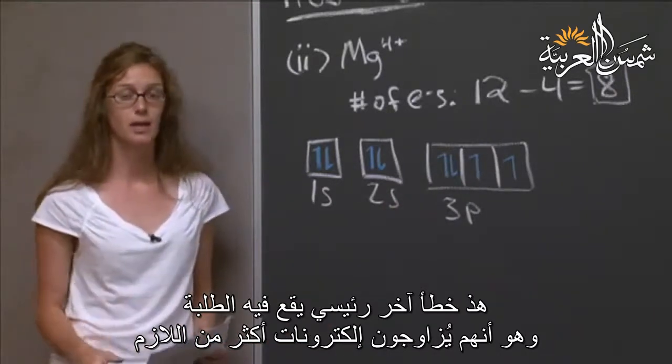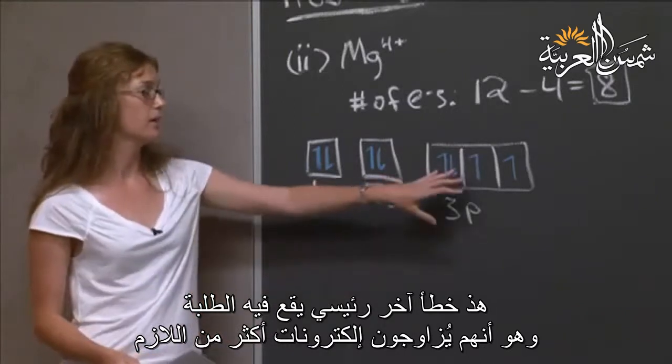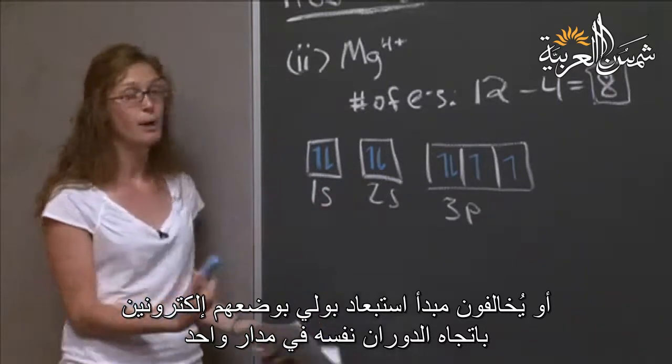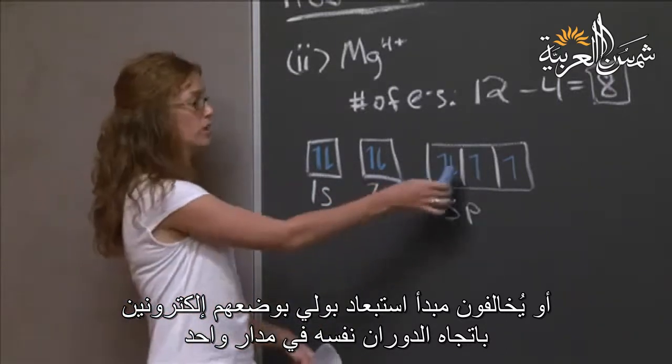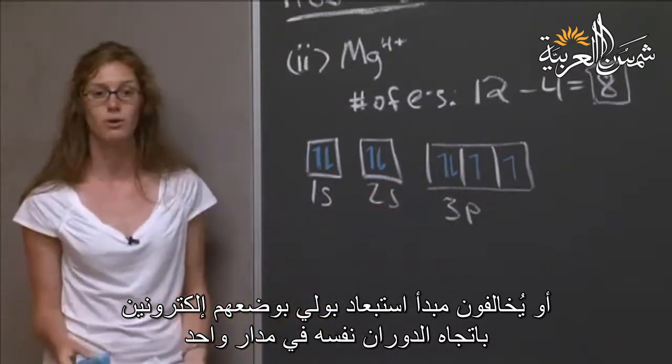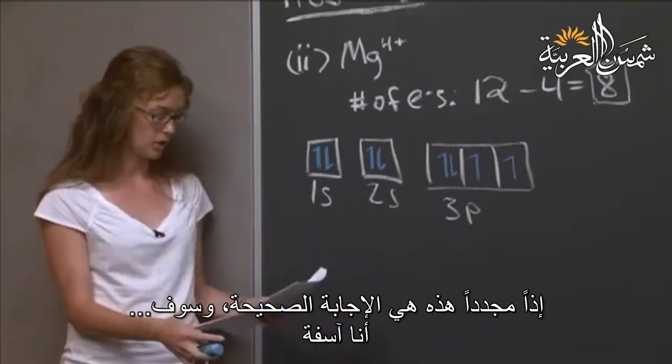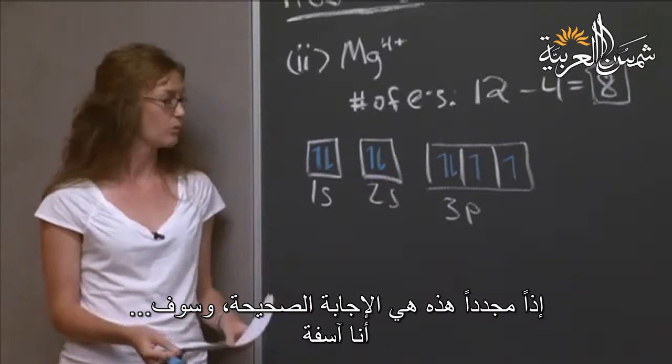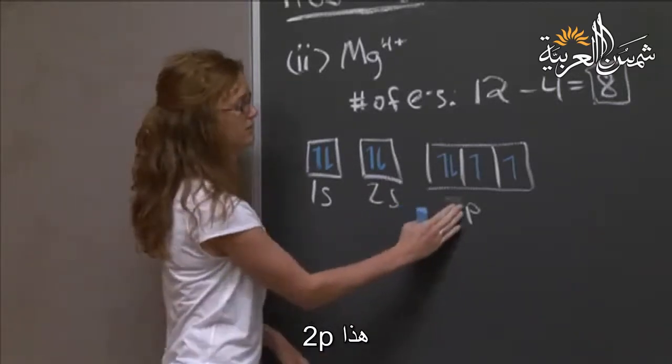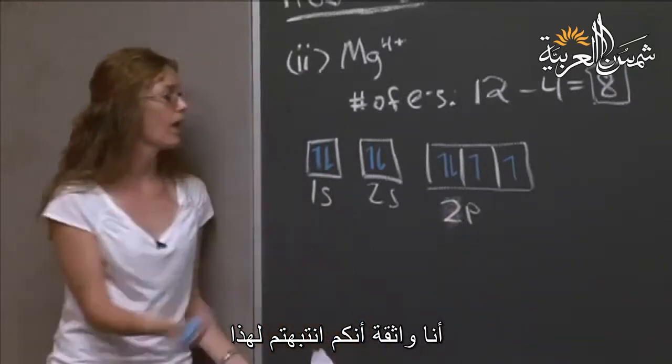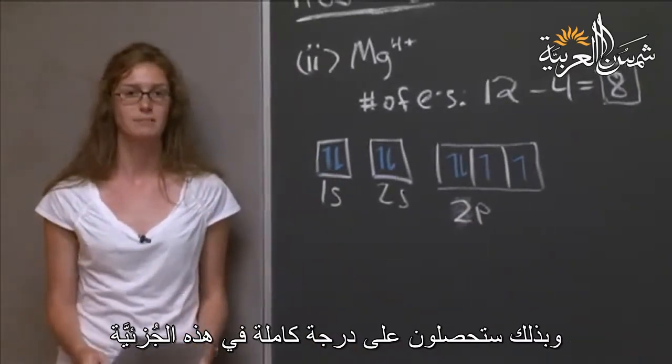The Pauli exclusion principle tells us one spin up and one spin down per orbital. And Hund's rule tells us that when we fill up this 2p, we're going to try to maximize the number of unpaired electrons. And then when we have to, we pair up the spins. Another main mistake that people make is they pair up too many spins, violate the Pauli exclusion principle by putting two electrons of the same spin in one orbital. This is 2p, and this is the correct answer that would have awarded you full points in this part.